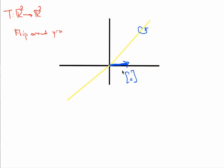And then I want to do the same thing for zero, one. So when I flip one, zero around this line, it's just going to end up here at zero, one. Okay. And so when I'm thinking about forming my standard matrix here, this is going to be a two-by-two matrix. And the first column is going to be the image, the transformation of one, zero. And that's what it is.